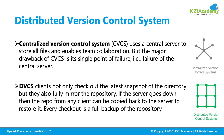Traditional centralized version control systems include SVN (Subversion), ClearCase, CVS, PVCS, and TFVC (Team Foundation Version Control System). To overcome that disadvantage, we have the distributed version control system, which also has a server-and-client concept. But in this case, even if the server goes down, one of the clients acts as a server and the connection is not lost. When the server comes back to normal, the inflow and outflow of data will not be lost. That is the advantage of the distributed version control system.